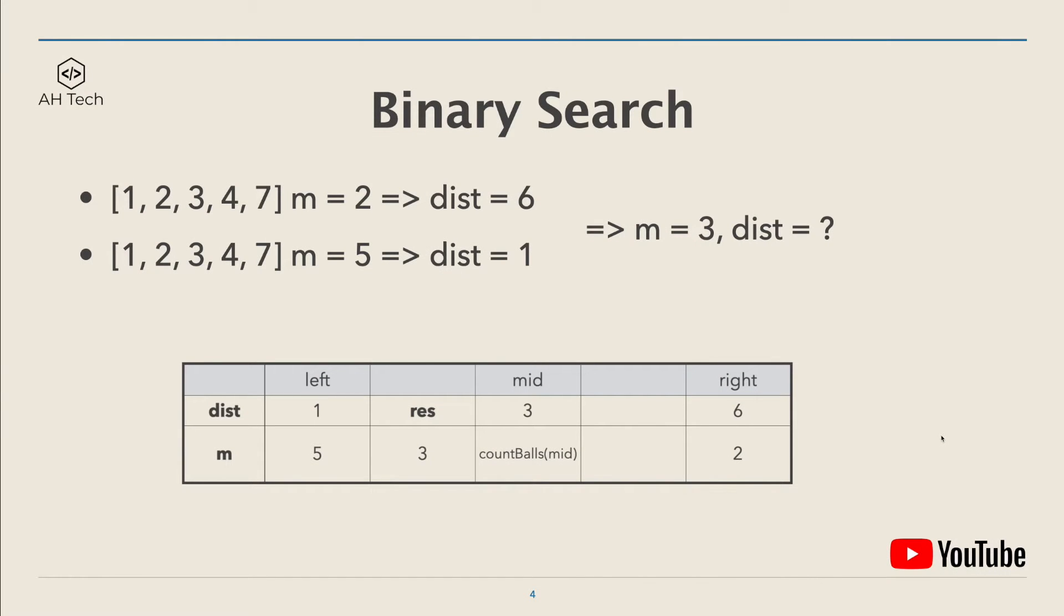For example 1, the array is [1, 2, 3, 4, 7]. If we only need to put two balls on the array, since the array is already sorted, we can just put a ball on the first and last element. In this case, the largest minimum distance would be 7 minus 1, which is 6.